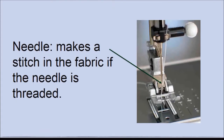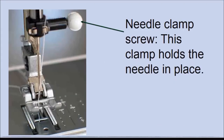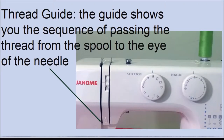The needle — the thread passes into the needle, which is used for making stitches. The needle clamp screw is used to secure the needle to the sewing machine. The thread guide shows you the sequence of passing the thread from the spool of thread on the top of your machine through the machine and into the eye of the needle.